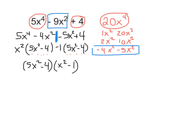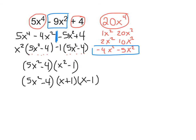Now you might think we're done — we used magic number, we factored this, and we're done. But we're not quite done. 5x squared minus 4 is a factor we cannot factor further. But x squared minus 1 is a difference of two squares, so we have one more step. We write 5x squared minus 4, and then we break x squared minus 1 into its difference of two squares: x plus 1 times x minus 1. This is our final answer.